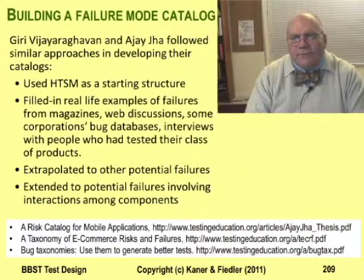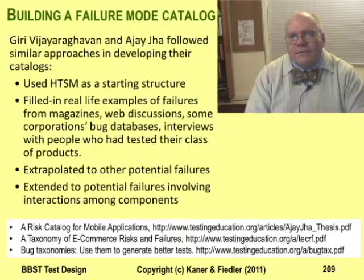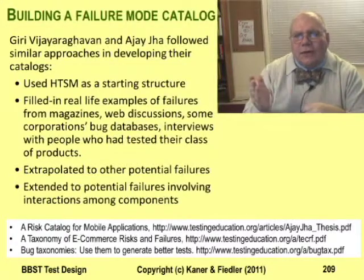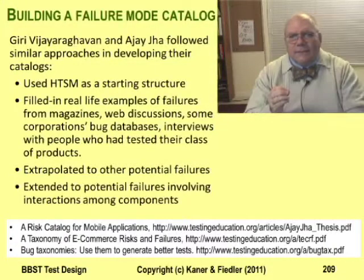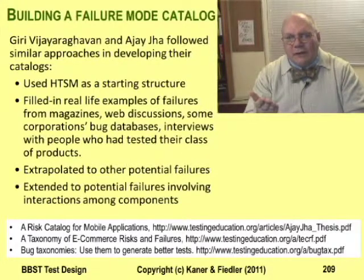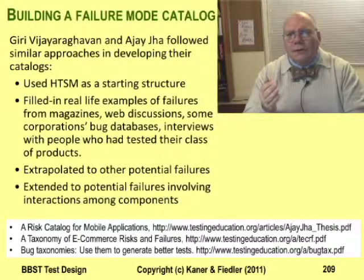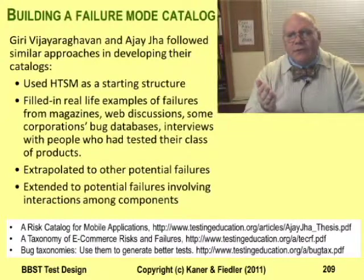Giri Vijay Raghavan and Ajay Jha wrote their master's theses at Florida Tech. Giri developed a failure mode catalog for e-commerce shopping carts, and Ajay developed a more general catalog for mobile applications. To develop their lists, they interviewed experienced testers, hunted bugs in several applications, and worked through hundreds of magazine articles and bug reports on the web. They each customized Bach's heuristic test strategy model, sorted their ideas into the model structure, and used the model to suggest additional test ideas. Giri describes this process in his paper on bug taxonomies.